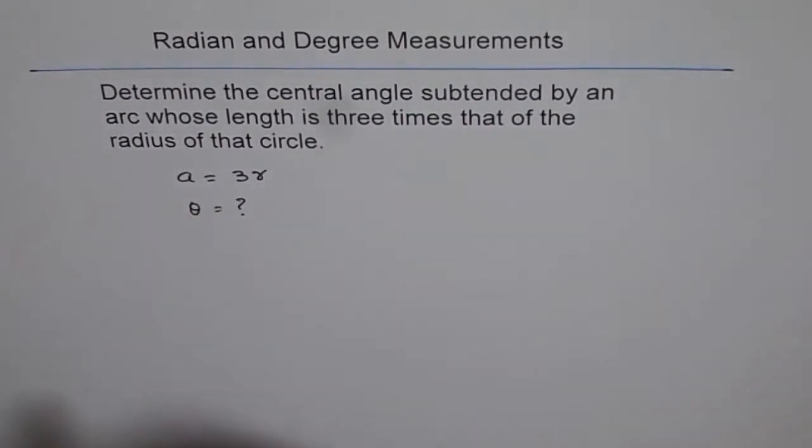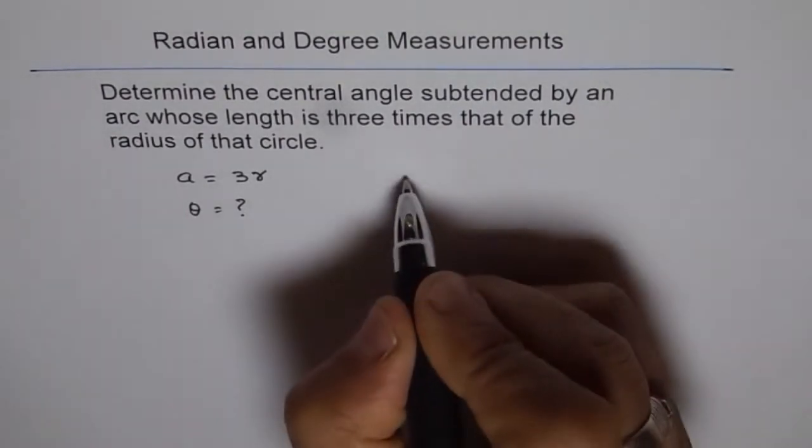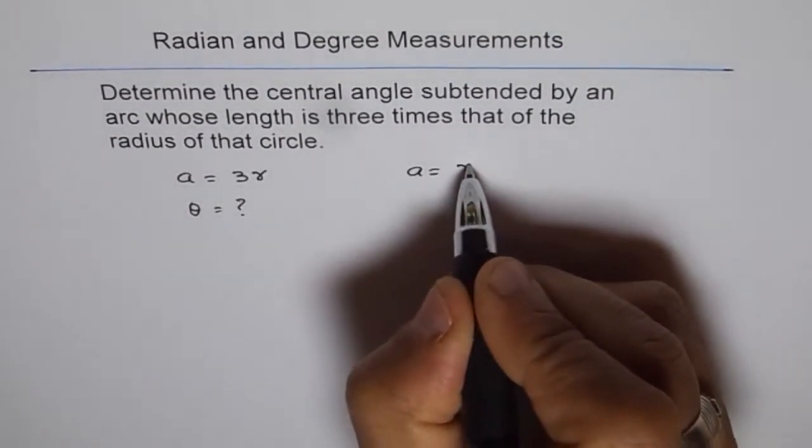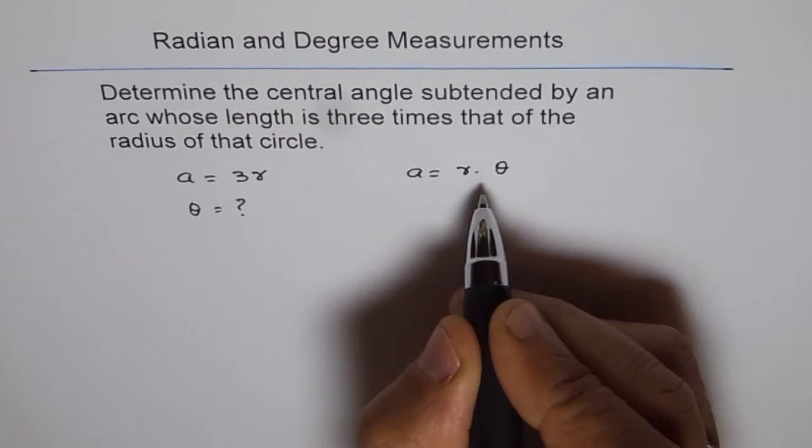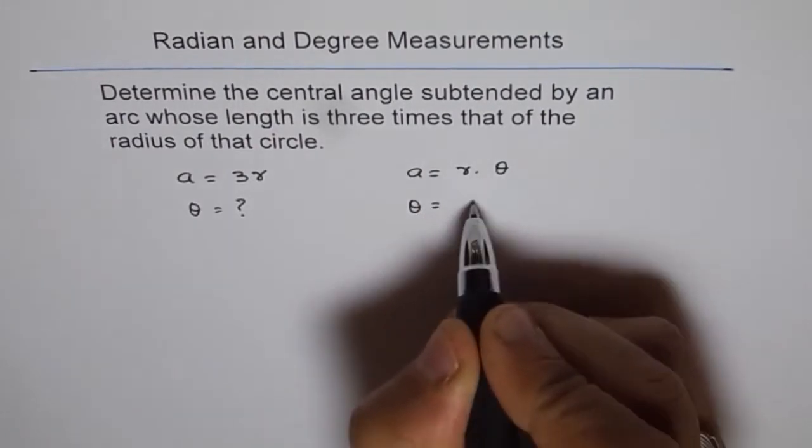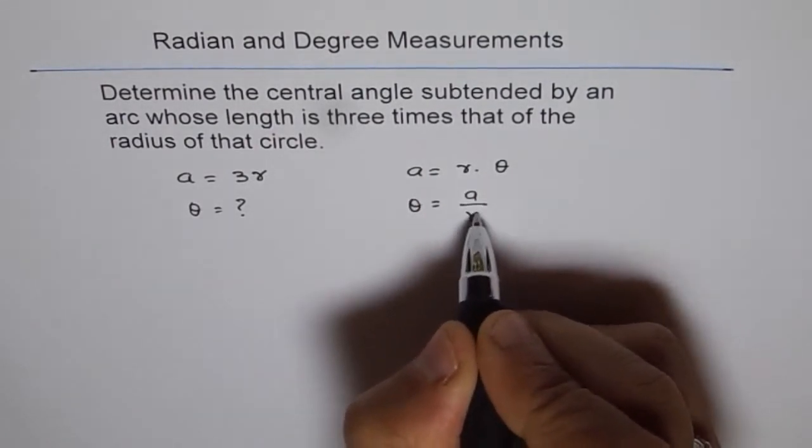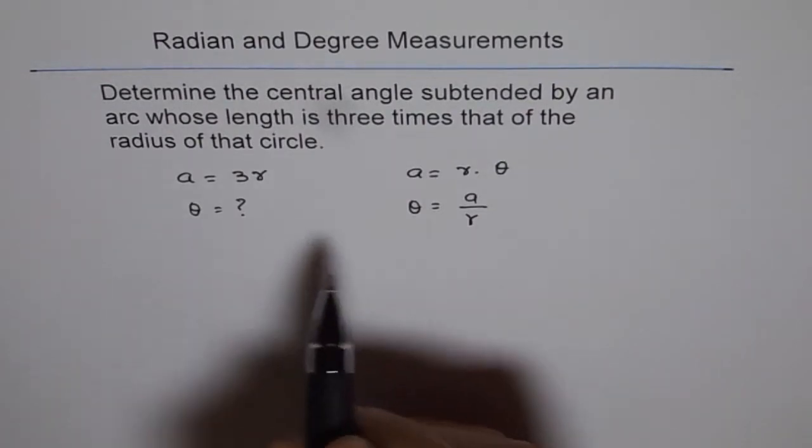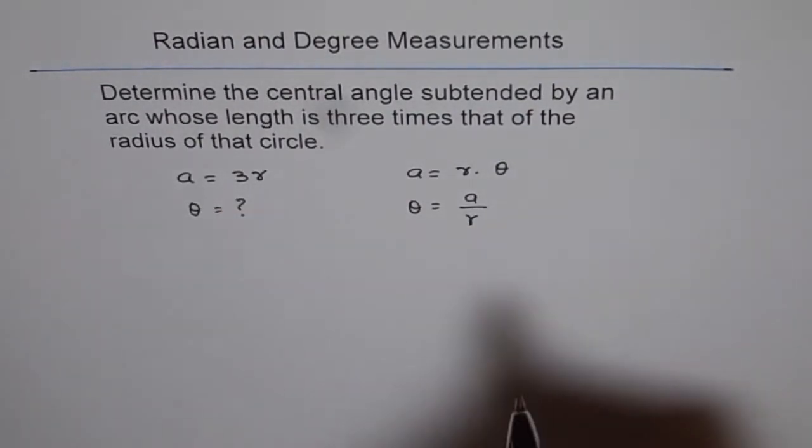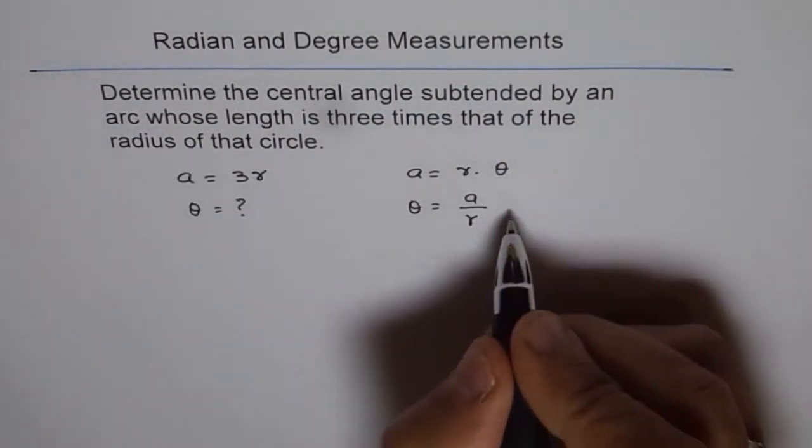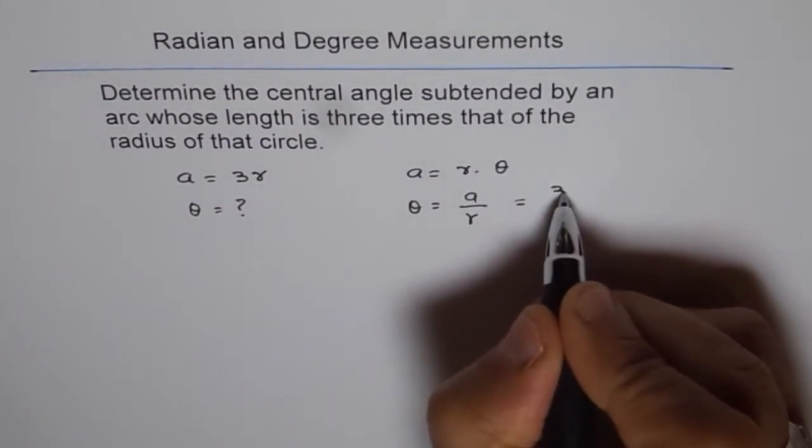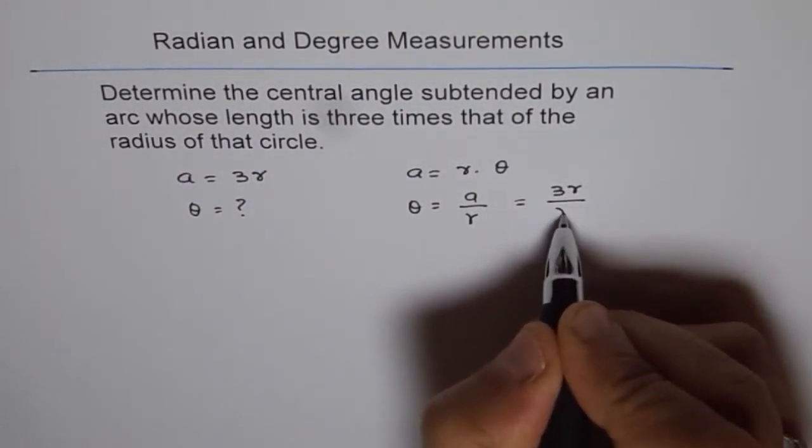How are A, R, and theta related? We know A equals R times theta. Therefore theta equals A divided by R. Now in this case we know A is three times R, so we can write this as three times R divided by R.